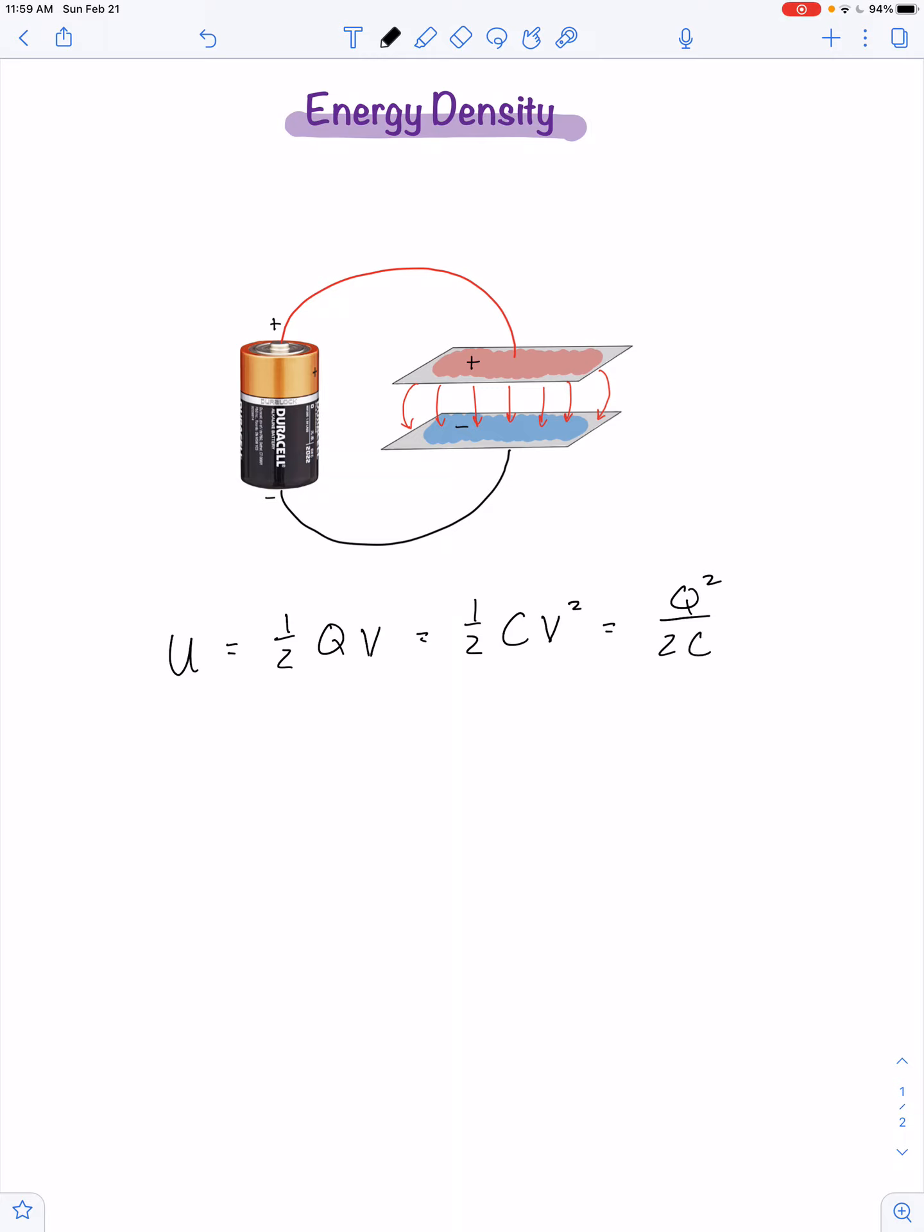One-half qv, one-half cv squared, or q squared over two c. We can say that that energy is actually stored in the electric field.